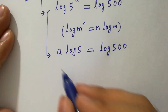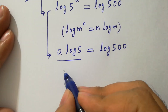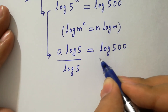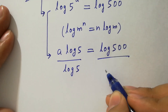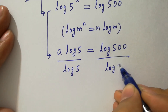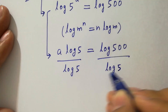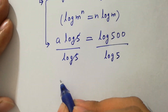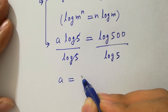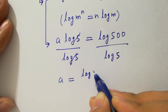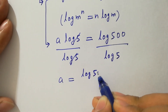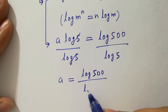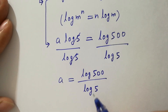To find a, divide by log 5 on both sides. Log 5 cancels, so a equals log 500 over log 5.